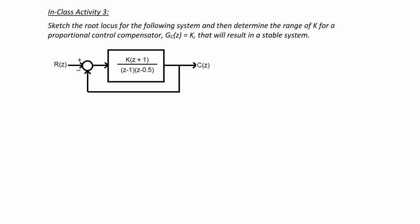In class activity 3, sketch the root locus for the following system and then determine the range of k for a proportional control compensator, gc of z equal to k, that will result in a stable system.